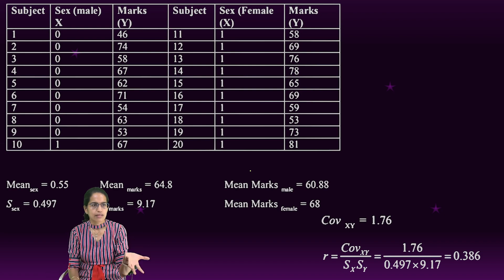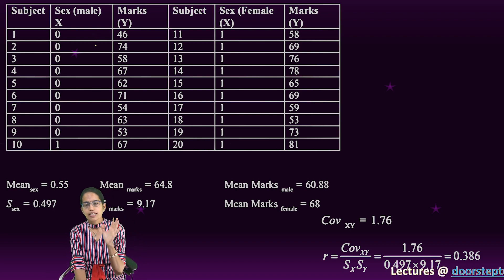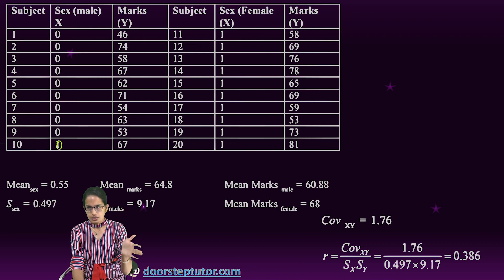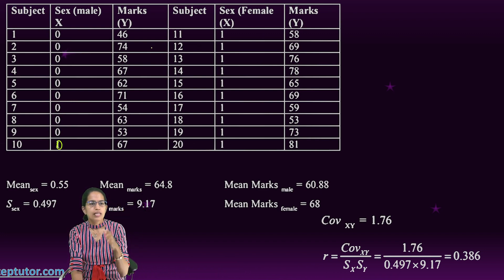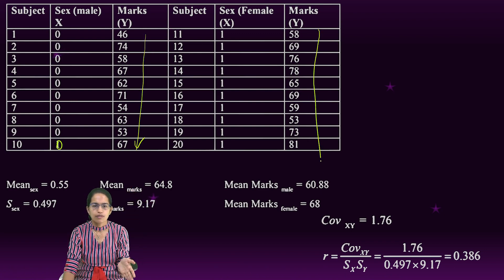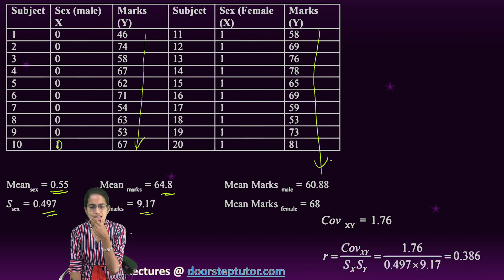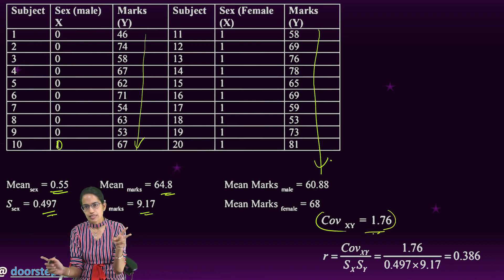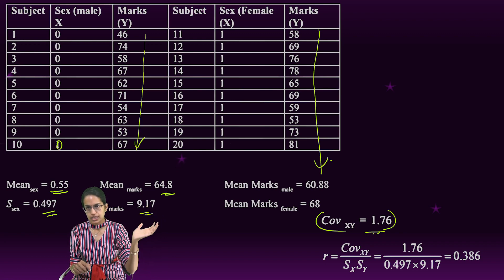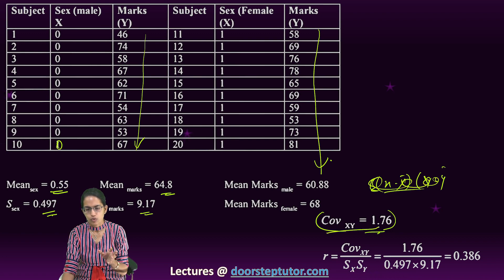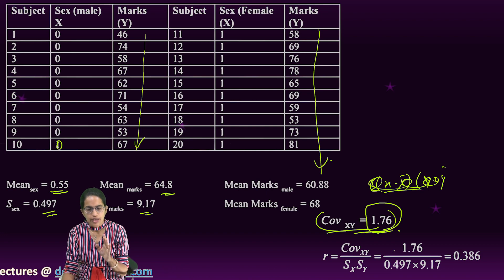Now, how do we calculate it? Let's say I am studying the marks of students and their gender. All males would be numbered as 0 and all females as 1. I would find the mean of the male candidates, the mean of the female candidates, the standard deviation of males and females, and then find the covariance. Covariance is the summation of (x minus x-bar) times (y minus y-bar), divided by n minus 1. Here, the covariance comes out to be, let's say, 1.76.